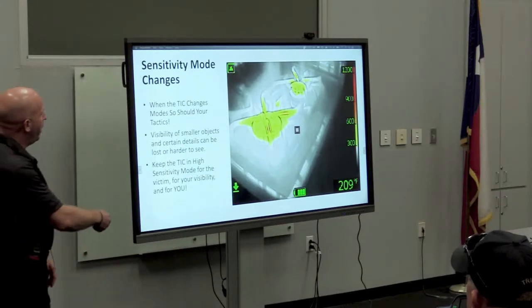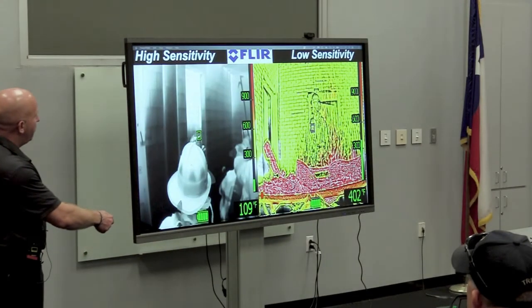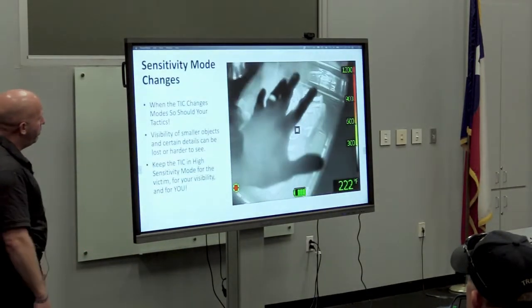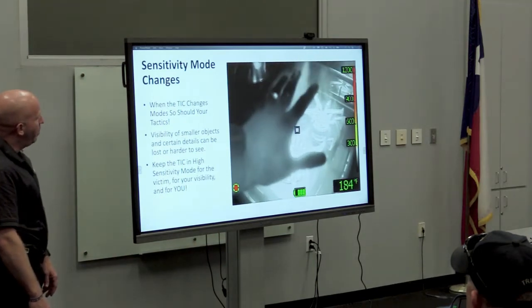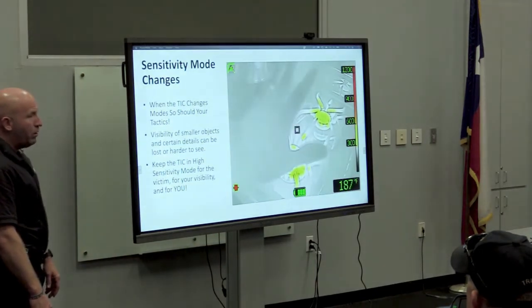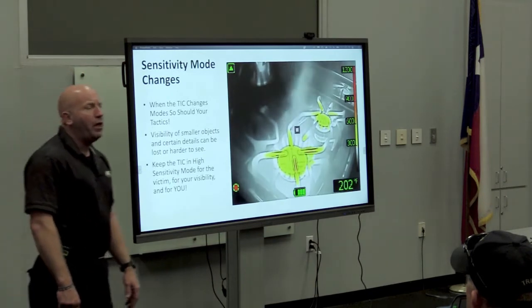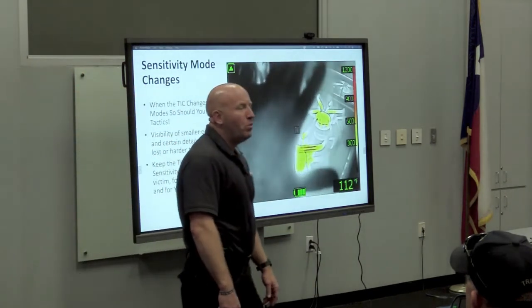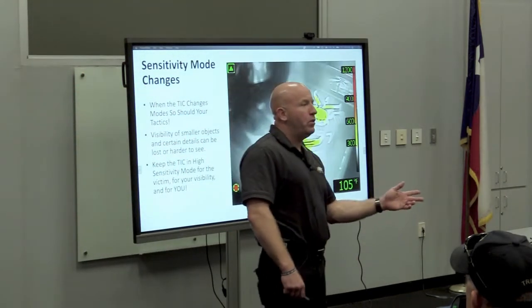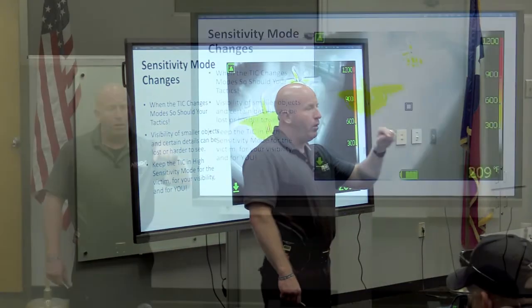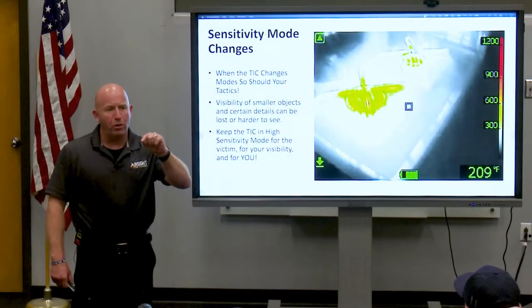Do it again. My hand starts off dark, and then when the camera changes to low sensitivity, how does my hand look? Light. Did my hand really change temperature? What changed? The background — and it went to low sensitivity.